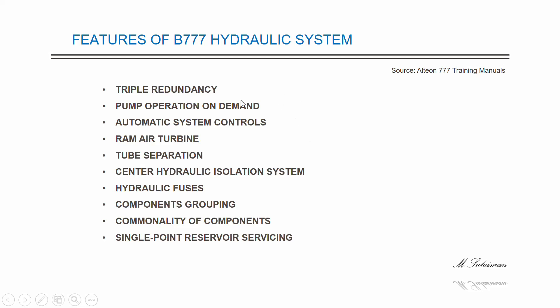The salient features of the hydraulic system include triple redundancy: three independent hydraulic systems, each with two or more pumps, and each system can operate flight controls independently. The second feature is pump operation on demand — one or two pumps operate continuously while other pumps operate only when there is a hydraulic demand. Another feature is automatic system controls: the flight crew sets pump switches before engine start, demand pumps operate automatically, and the system uses hydraulic interface module electronic cards for control, fault detection, and indications.